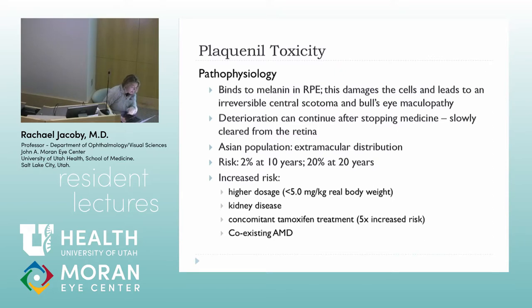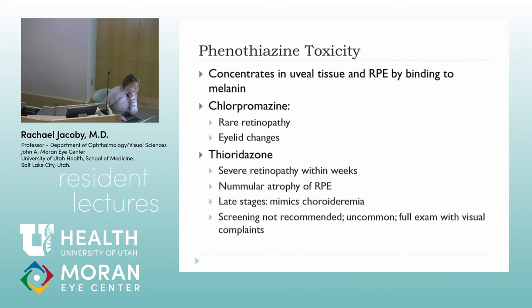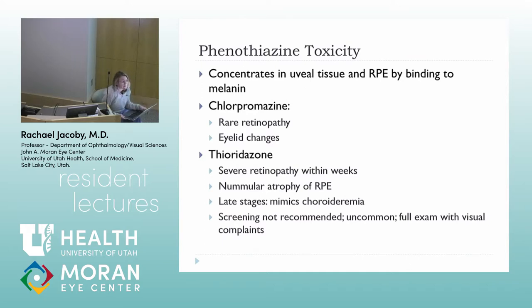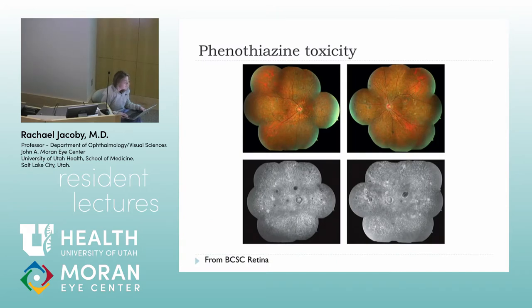Another medication toxic to the retina by binding to RPE melanin is phenothiazines — specifically thioridazine and chlorpromazine. Chlorpromazine doesn't often cause retinopathy but can cause eyelid pigmentary changes. Thioridazine can cause a very severe retinopathy that can come on within weeks of starting, with nummular atrophy of the RPE; in late stages it could look like choroideremia. There are no screening recommendations given rarity, but any visual complaints require a full exam and cessation of medication.